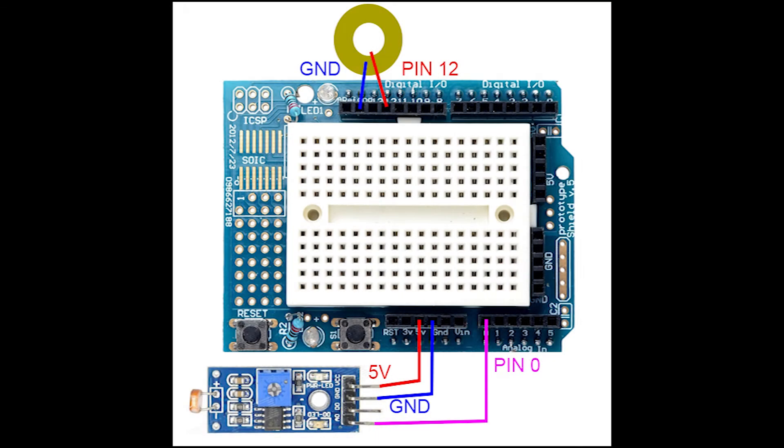Our circuit is super simple this time around. Plug the positive red wire from the piezoelectric buzzer into pin 12, the ground wire on the piezo to the ground on the Arduino, the A0 analog output from the photoresistor module to the A0 pin on the Arduino, and the 5 volt and ground to their respective pins on the Arduino.